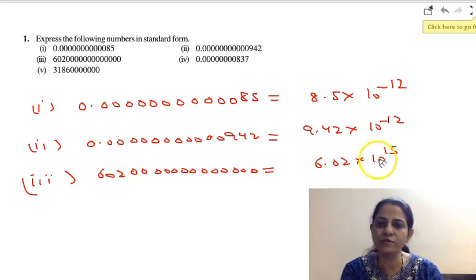So the power of 10 will become 15 because already 13 zeros are there, and 2 more decimal places I am shifting to the left. So it will become 6.02 × 10^15.